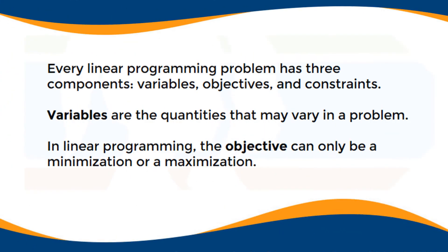Every linear programming problem has three components: the variables, objectives, and constraints. Variables are the quantities that may vary in a problem.